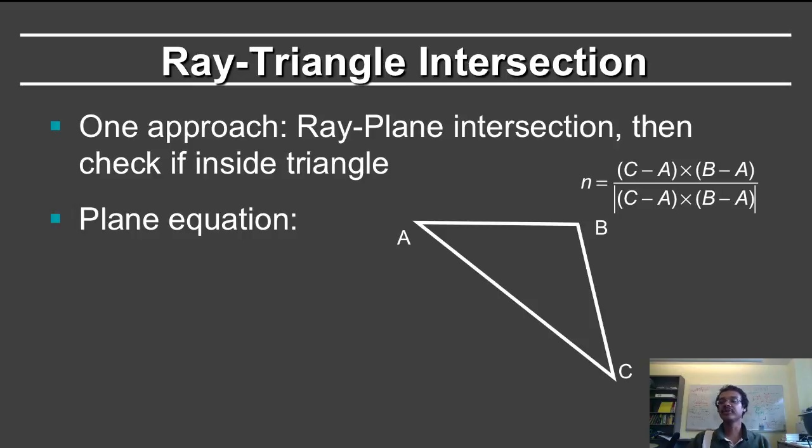The next question is, what is the equation for a plane? You may remember this from high school geometry. Essentially the normal dot product with any vector in the plane has to be zero.